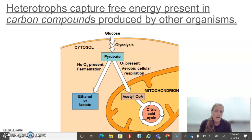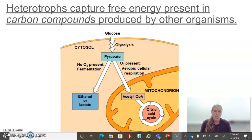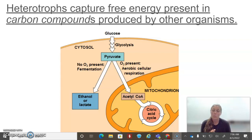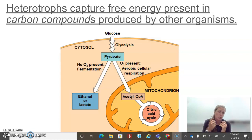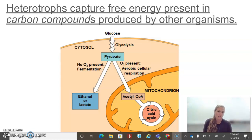The general idea is that we have glucose, which is a carbon compound — if we remember our macromolecules, it's a carbohydrate because it ends in '-ose.' It's entering a cell and going through the stage of glycolysis, and then two big things can happen. One: there can be O2 present — oxygen — and in that case it's going to enter a mitochondria, go through the citric acid cycle, go through the electron transport chain, and give us a lot of energy. We'll learn all that other stuff a little bit later.